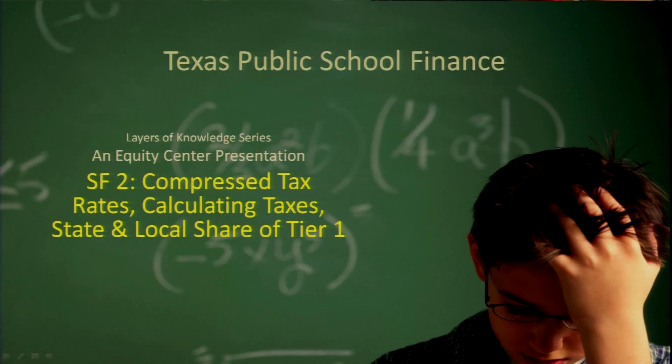In this session we're going to talk about compressed tax rates, something that came about in a 2006 special session in response to West Orange Cove II, which was a school finance litigation prior to the one currently going on. We're also going to talk about calculating taxes in general, and the state and local share of Tier 1.